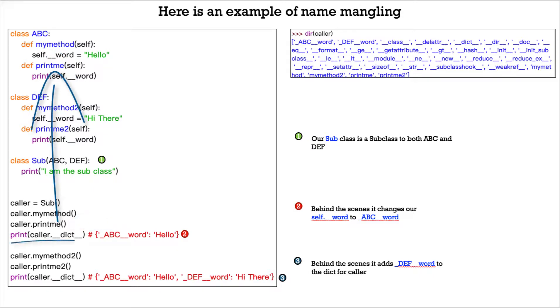When we do caller with the special dunder method dict, we see that it prints out underscore ABC double underscore word. So it automatically prepends ABC to our double underscore word object, and that prints out hello.